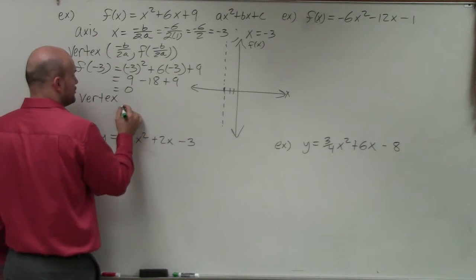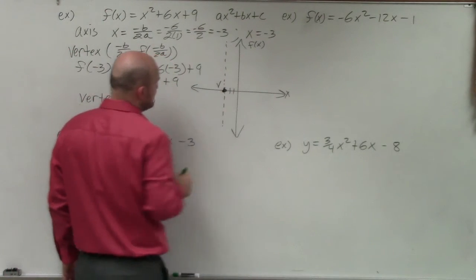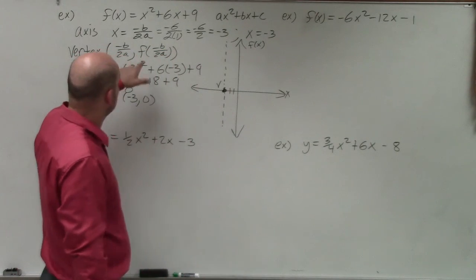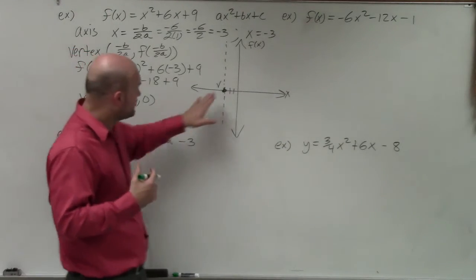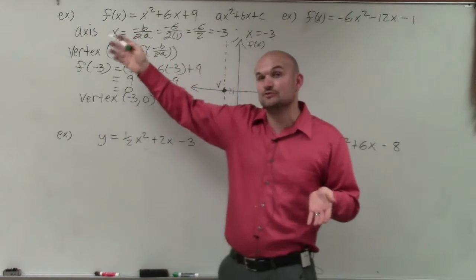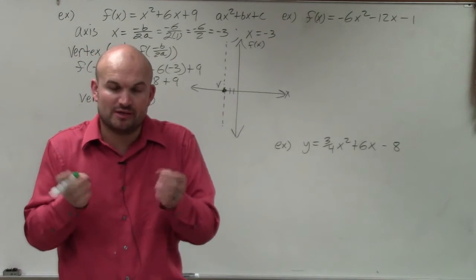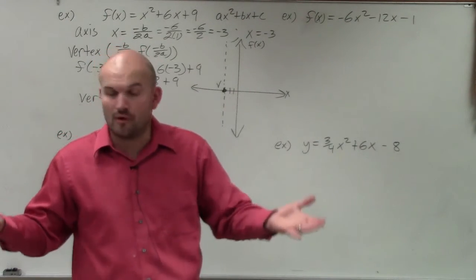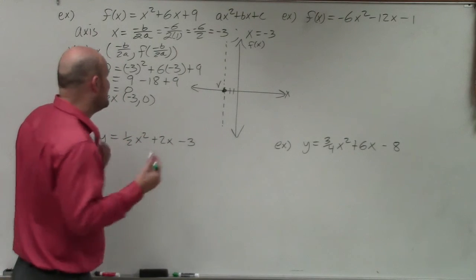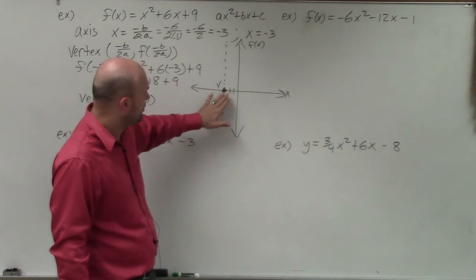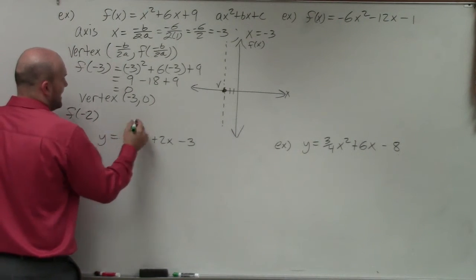Therefore, my vertex is at the coordinate point negative 3 comma 0. Now, to graph it, it's helpful to identify if the graph is going to be opening up or down. My a is positive, so I know my graph is going to be opening up. To find the remaining points, since a equals 1, I can use the pattern over 1 up 1, over 2 up 4 — but another way is to pick two points right next to the axis of symmetry. I'll do f(-2) and f(-1).